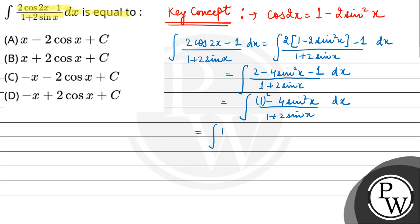This factors to (1 - 2sinx)(1 + 2sinx)/(1 + 2sinx). You will get (1 - 2sinx) dx.